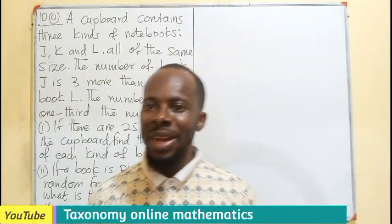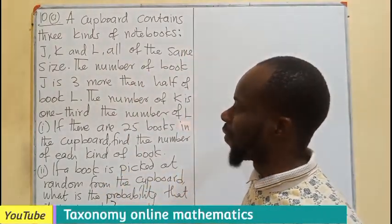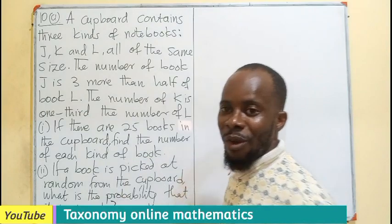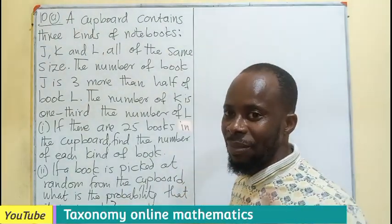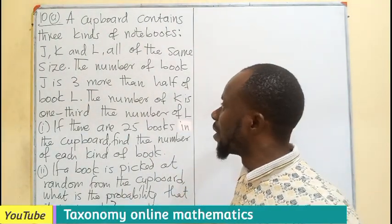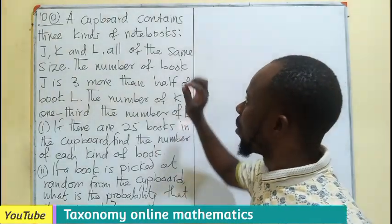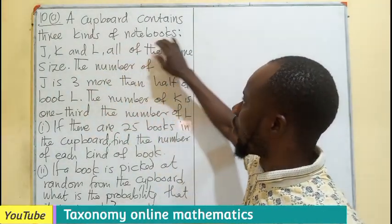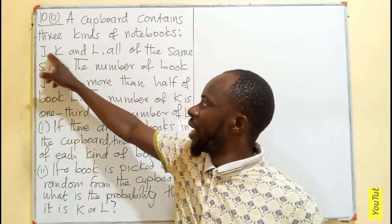Hello, welcome. Let's work through question 10a and b of the just-ended WASSCE 2023 September edition for Ghana, Core Mathematics. The question says a cardboard contains three kinds of notebooks labeled J, K, and L, all of the same size.